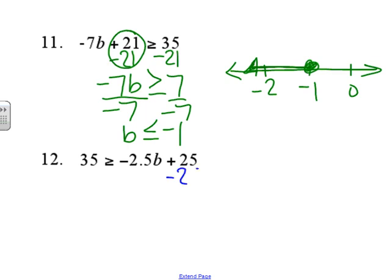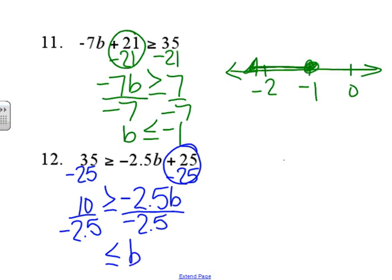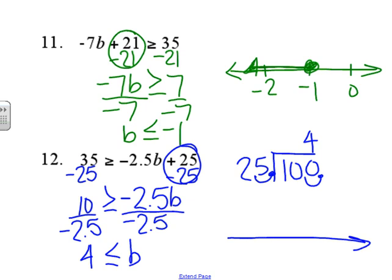Number twelve: subtract 25 from each side, so we get 10 is greater than or equal to negative 2.5b. Divide by negative 2.5 — the inequality reverses. To compute 10 divided by 2.5, we multiply both by 10, so we're really doing 100 divided by 25, which is 4. So 4 is less than or equal to b. That would be a closed circle with the ray going to the left.